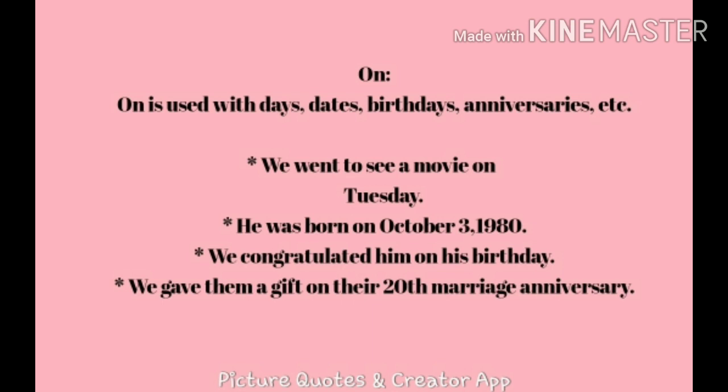The next preposition is 'on.' 'On' is used with days, dates, birthdays, anniversaries, etc. For example: 'We went to see a movie on Tuesday' — use 'on' before days like Monday, Tuesday, Wednesday, Thursday. 'He was born on October 3, 1980' — if you are mentioning merely the year, use 'in,' but if you are giving the whole date, use 'on,' as in 'on October 3, 1980.'